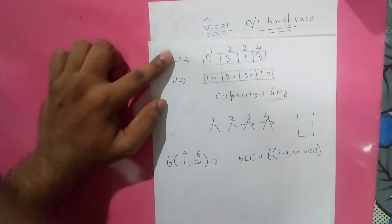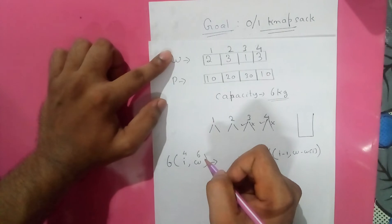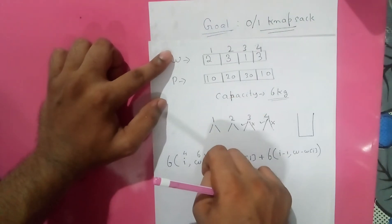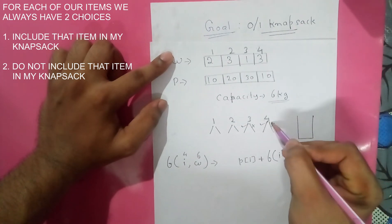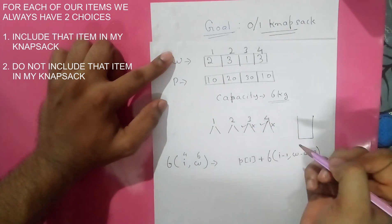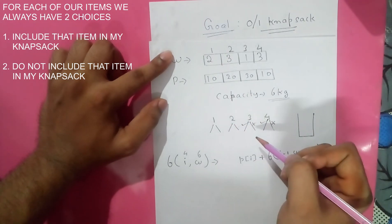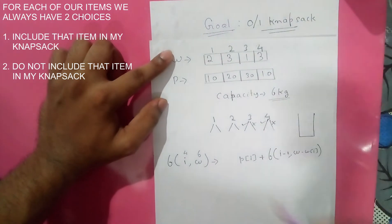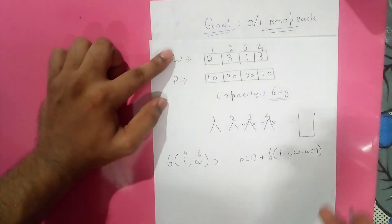For each of these items — item 1, item 2, item 3, and item 4 — we have two options: we can include this item in our knapsack, or we may not include it. This applies similarly for all items. We'll now write a recursive equation for this and then look at the recursive tree to understand the overlapping sub-problems.